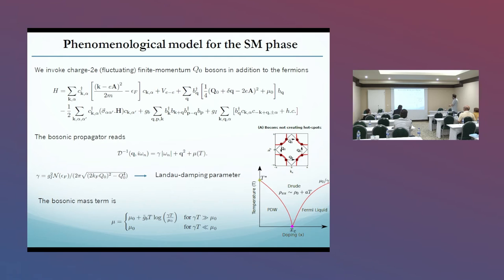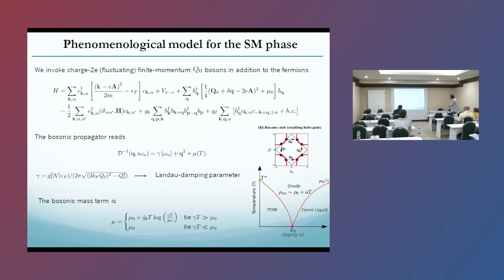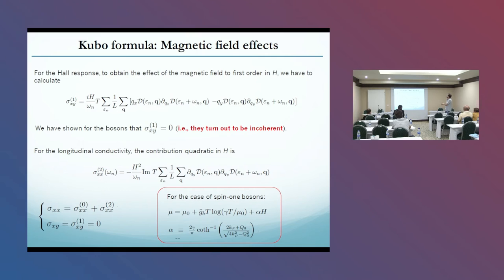This is the phase diagram we get: there is a pair-density wave order which becomes suppressed at the critical doping, there is a Fermi-liquid regime for large doping, and within the quantum critical regime we get a linear resistivity.